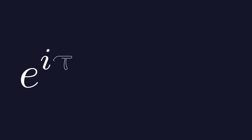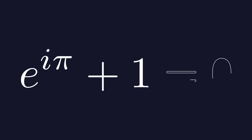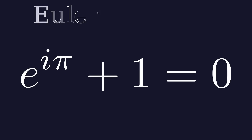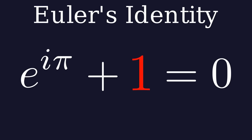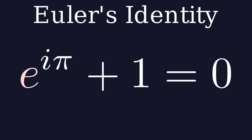e to the power of i times pi plus 1 is equal to 0. Euler's identity is one of the most famous equations in math, because it links five fundamental mathematical constants: 0, 1, pi, the imaginary unit i, and Euler's number.